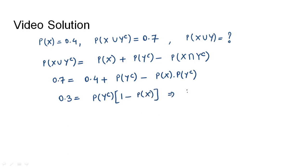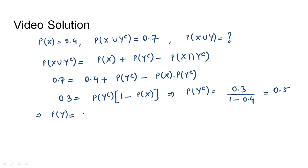From this we can find P(Y^c) = 0.3 divided by (1 - 0.4), which equals 0.3 / 0.6 = 0.5. Therefore, P(Y) = 1 - P(Y^c) = 1 - 0.5 = 0.5.